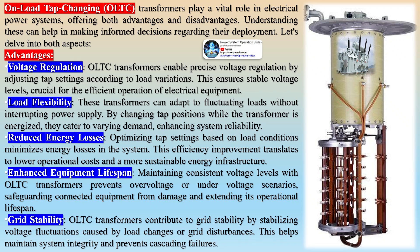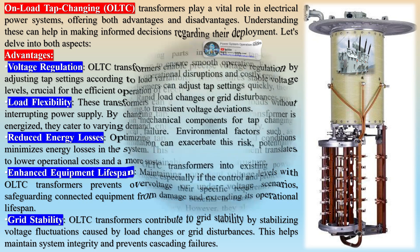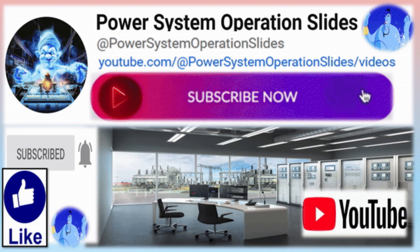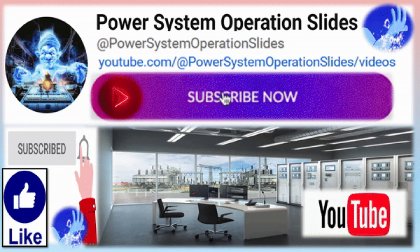While OLTC transformers can adjust tap settings quickly, there is still a limit to their response time — rapid load changes or grid disturbances may exceed this response capability, leading to transient voltage deviations. The reliance on mechanical components for tap changing introduces the risk of mechanical failure; environmental factors such as temperature variations and contamination can exacerbate this risk, potentially causing downtime and revenue loss. Integrating OLTC transformers into existing power systems may also pose compatibility challenges if control and protection systems are not designed to accommodate their specific requirements. In conclusion, OLTC transformers offer significant benefits in voltage regulation, load flexibility, and energy efficiency, but come with inherent complexities and maintenance challenges that must be carefully managed.